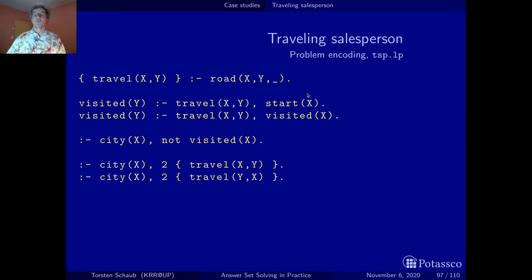We have defined the starting node and if our solution candidate suggests to travel from the starting node to another node y, we can derive that y has been visited. And now recursively, if we have derived that x can be visited and our solution candidate suggests to travel from x to y, then y can also be visited in our solution candidate.